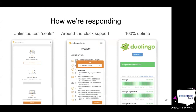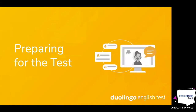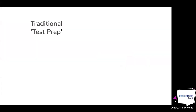Since the pandemic, we have unlimited test seats because you take the test online. We have around-the-clock support in a variety of languages, and we also have 100% uptime — meaning the test is not crashing. We have servers around the world to ensure speed is never an issue, and we have 24/7 support. At any point, if you're having an issue, you can click the help button.